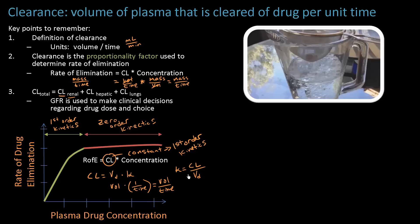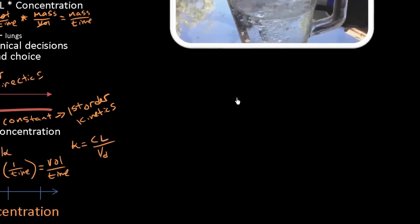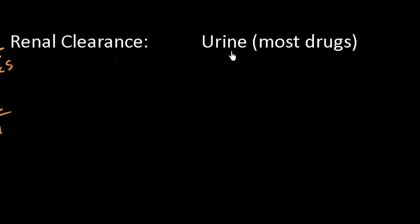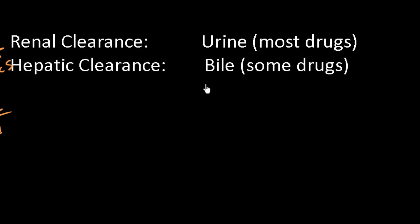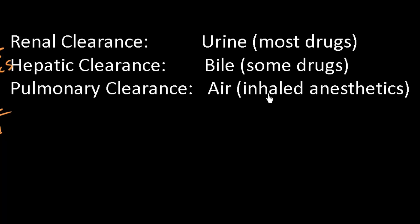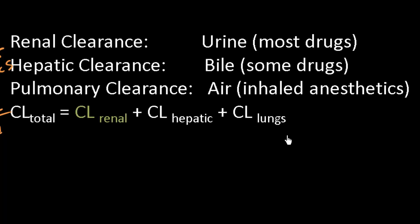Total clearance is the sum of clearance at each organ — organs that have access to the outside world. Renal clearance excretes drugs into the urine and applies to most drugs. Hepatic clearance excretes drugs into bile, which passes into feces. Pulmonary clearance is particularly important for inhaled anesthetics — volatile substances that reach the brain and are then breathed out when the gas is removed. Total clearance is simply the sum of all these organ-level clearances.